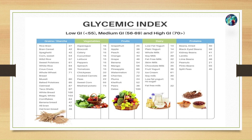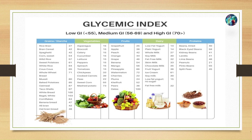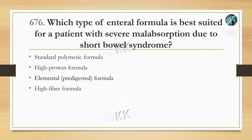GI ranks food based on how quickly they raise glucose compared to pure glucose. GI less than 55 = low glycemic index; 56 to 69 = medium GI; 70 and above = high GI। कभी-कभी directly पूछा जा सकता है जैसे rice का GI कितना होता है, whole milk या soy milk का GI कितना होता है। आप इसका screenshot भी ले सकते हैं।